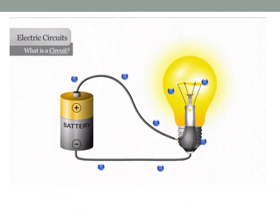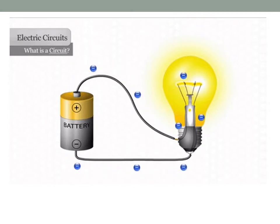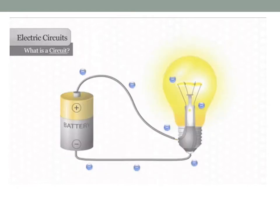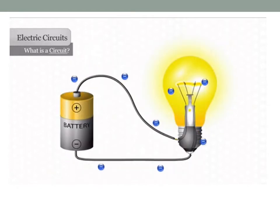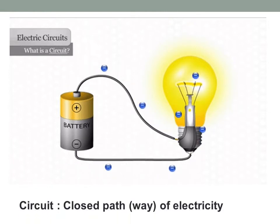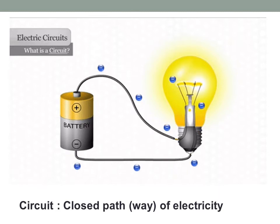This is called the simple electric circuit. The energy comes from the battery, moves through the wire, makes the lamp light, and goes back to the battery — it's a closed circuit. If there is a break in this circuit, the lamp will not light. So, a circuit is a closed path, or way, of electricity.